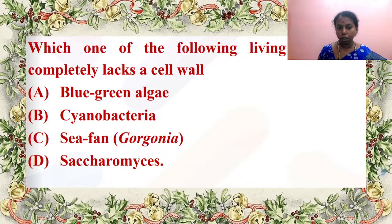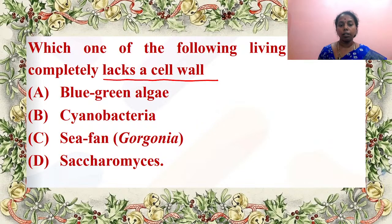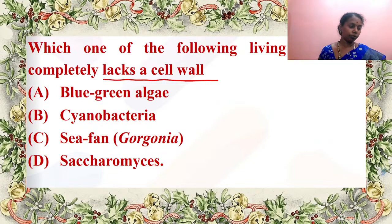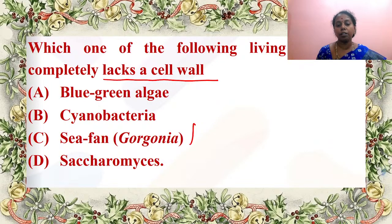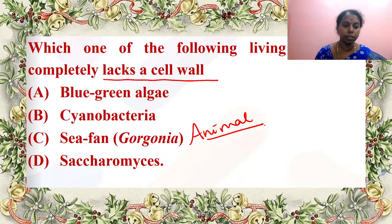Which of the following living organisms completely lacks a cell wall? Is it blue-green algae, Cyanobacteria, Gorgonia, or Saccharomyces? Blue-green algae and Cyanobacteria have cell walls; Saccharomyces (yeast) has a chitin cell wall. Gorgonia is an animal — a coelenterate — and it does not have a cell wall; only a membrane persists. Answer is C — excellent answer.